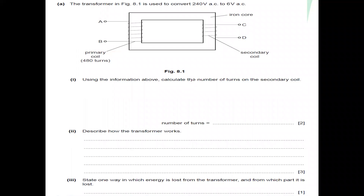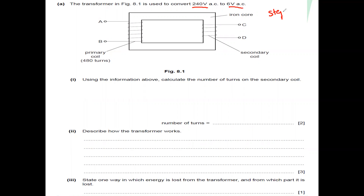In the first question, a transformer in figure 8.1 is used to convert 220 volts to only 6 volts. The input is a high voltage and the output is low, so this is a step down transformer.